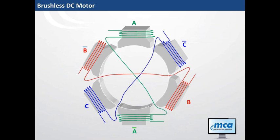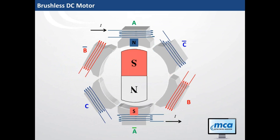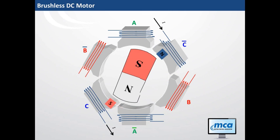An animation shows how current is moved through the individual phases. This motor is also referred to as a three-phase motor and is driven by three half-bridges. A brush motor required a single H-bridge; a stepper motor required two H-bridges; and for a brushless motor you need three half-bridges. Current is controlled through individual phases and the permanent magnets on the rotor align to the electromagnetic field.